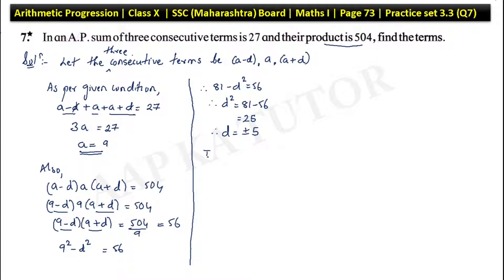So d has two values for a single value of a. If a equal to 9 and d equal to 5, then the three terms we get are: a minus d which is 9 minus 5 which is 4, a which is 9, and a plus d which is 14. That is 4, 9, 14.